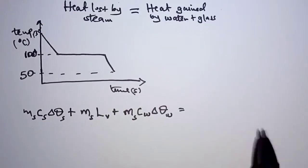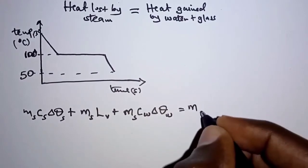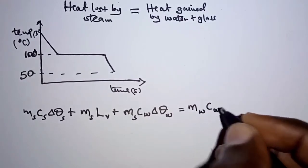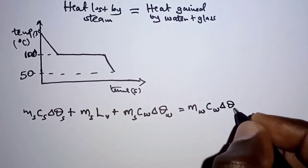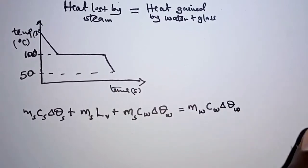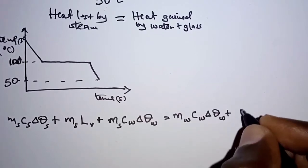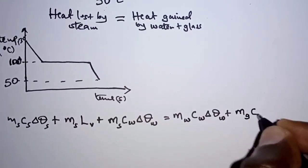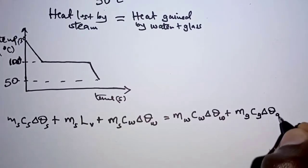On the right-hand side we have the heat gained by water and glass. For water: mass of water × specific heat capacity of water × temperature change. We also add the heat gained by glass: mass of glass × specific heat capacity of glass × temperature change for glass.